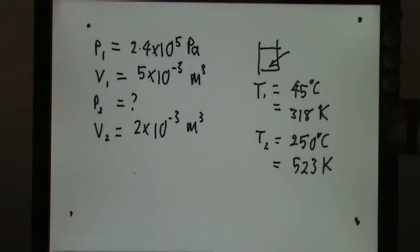Using all this data, we can solve this. P1 V1 over T1 equals P2 V2 over T2. With this in mind, I can just key in all the values.